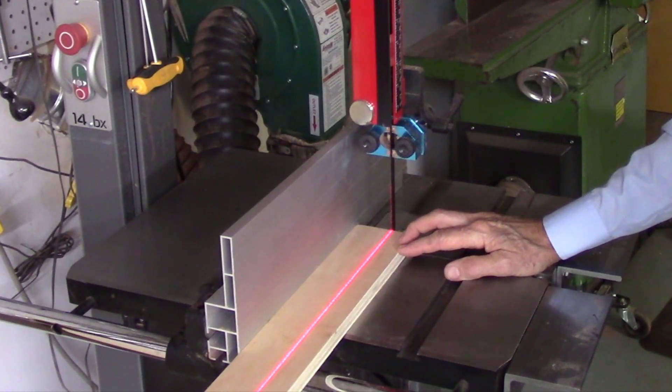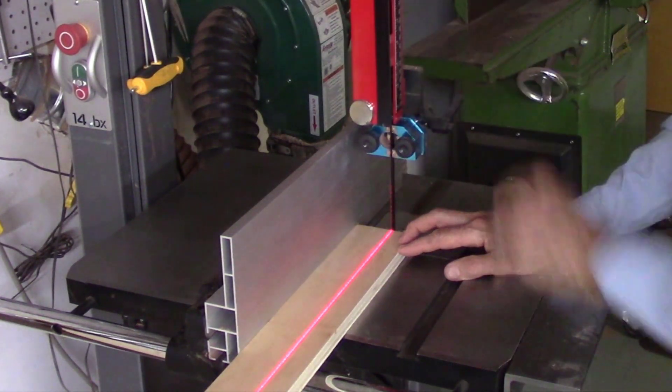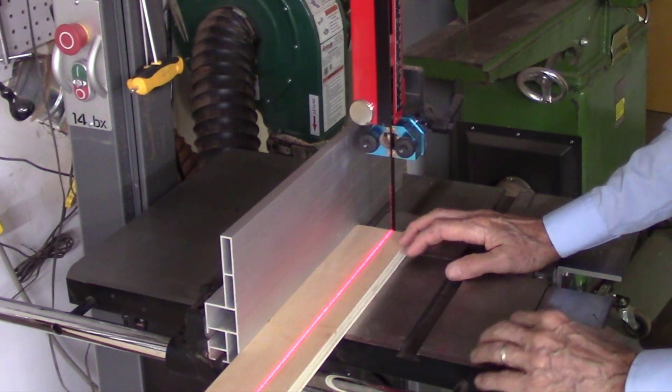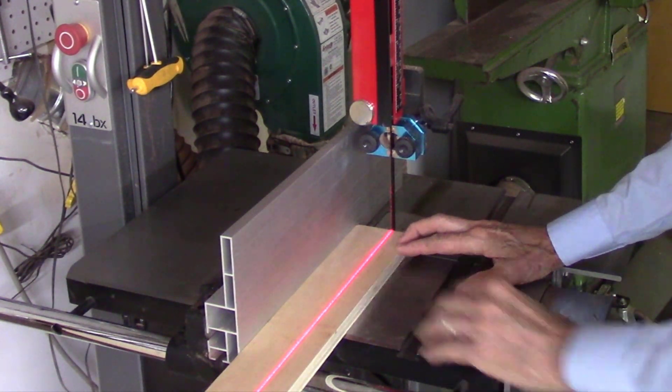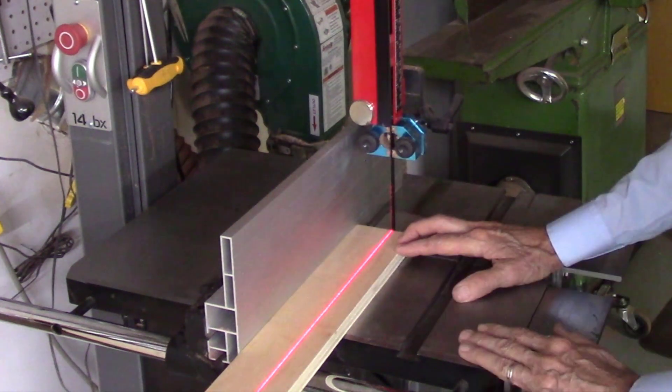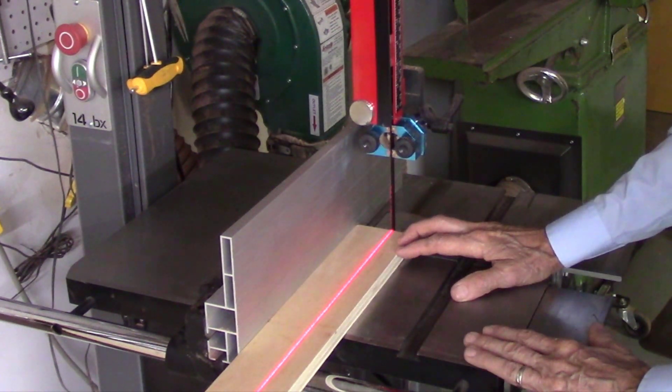In our previous video we described the installation of the AcuPath system on the bandsaw using my AcuSlice rail as a guide. In this video I will be using the standard bandsaw fence as a guide to align the laser beam.